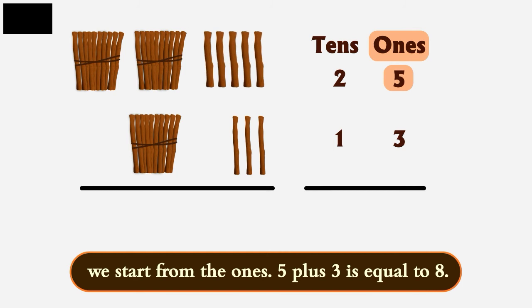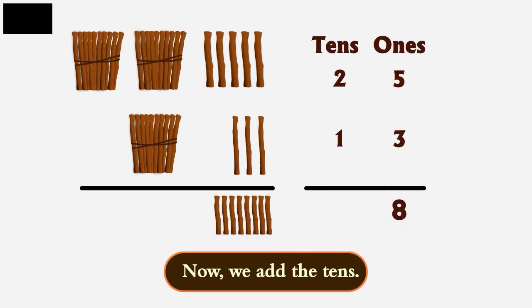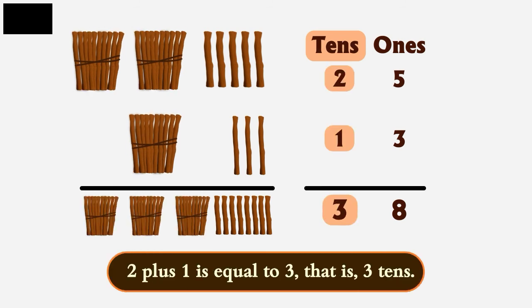5 plus 3 is equal to 8. Now, we add the tens. 2 plus 1 is equal to 3. That is, 3 tens.